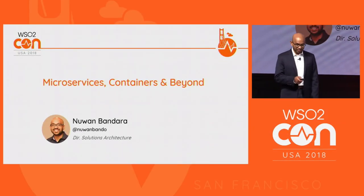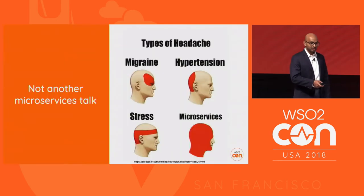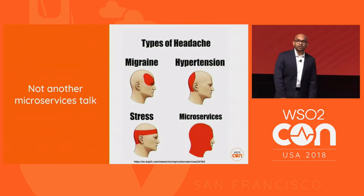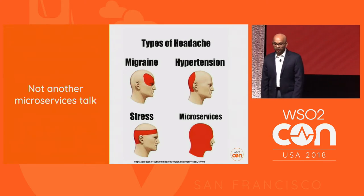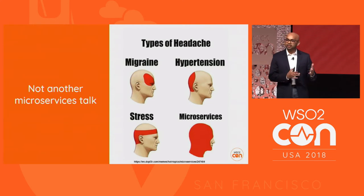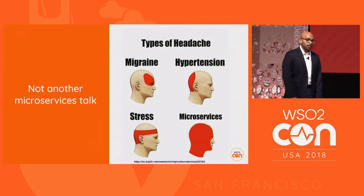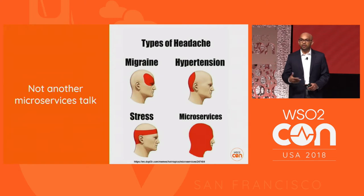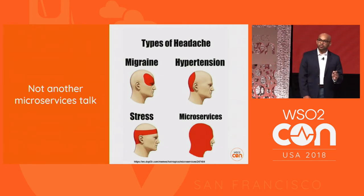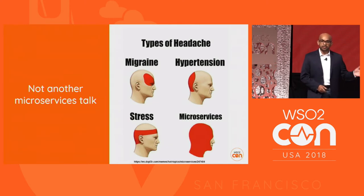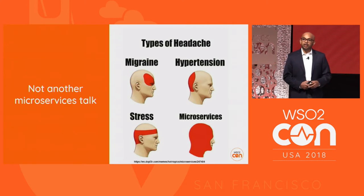I'm not trying to disappoint anybody in the audience, but this talk is not about microservices. I'm not going to talk about the characteristics of microservices — Martin Fowler's definition, you know, it's not a project, it's a product, dumb pipes and smart endpoints, decentralized governance, decentralized data planes. I assume everyone in this audience has gone through papers and talks about microservices, so I'll concentrate on the beyond aspect and follow up on what Asanka talked about with the cell architecture, and how we're thinking about beyond microservices and containers.